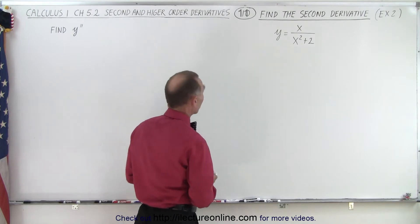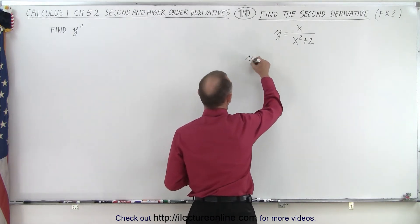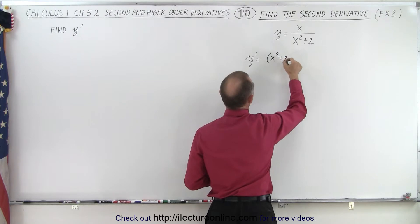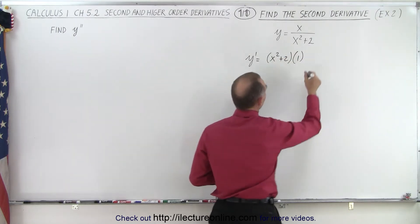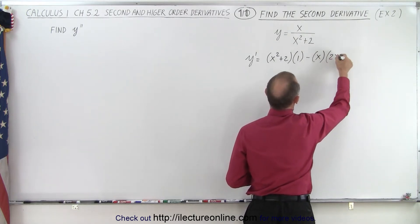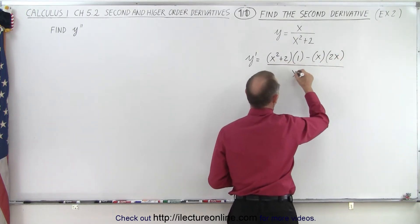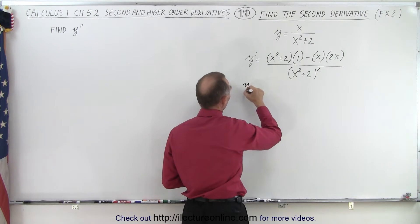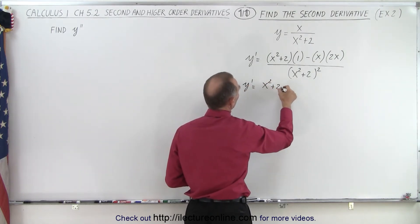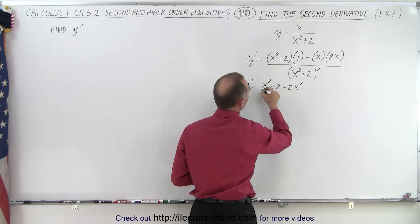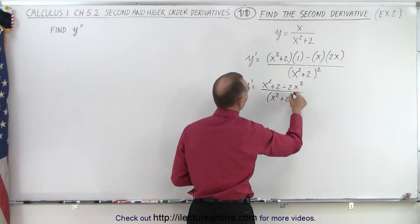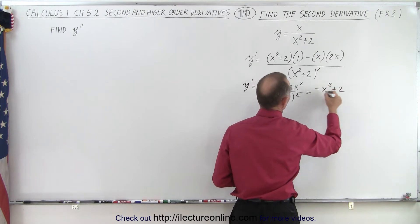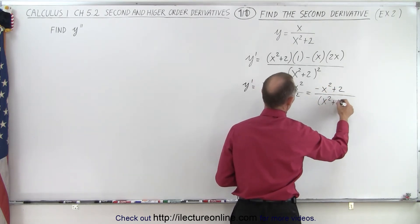We want to find y double prime, so we begin by finding y prime. Here we have a quotient, so we'll use the quotient rule. That would be the denominator (x squared plus 2) times the derivative of the numerator, minus the numerator times the derivative of the denominator, all divided by the denominator squared. When we simplify, we get y prime equal to (x squared plus 2 minus 2x squared) divided by (x squared plus 2) squared, which equals (negative x squared plus 2) divided by (x squared plus 2) squared.